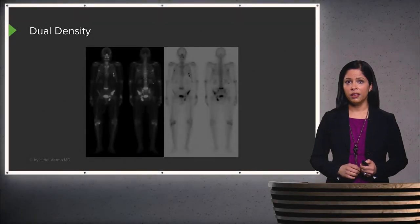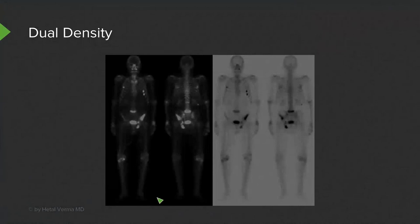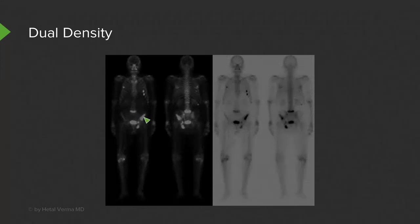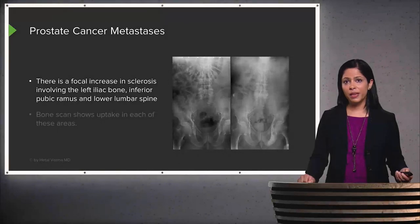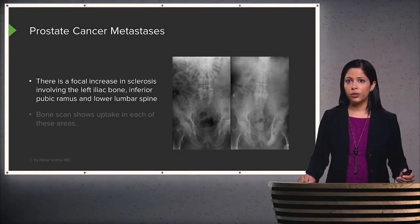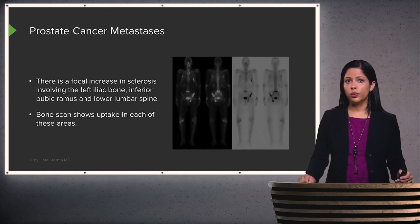This patient had a bone scan, and areas of increased bone turnover are the ones that light up on a bone scan. On the frontal image, the areas that showed increased density on the radiograph now have increased uptake on the bone scan — the lower lumbar spine, the iliac crest, and the inferior pubic ramus. Note the normal activity within the bladder. The inverted images on the right help visualize these findings better. This patient has prostate cancer metastases, and the areas of increased sclerosis represent blastic metastases confirmed by the bone scan uptake.